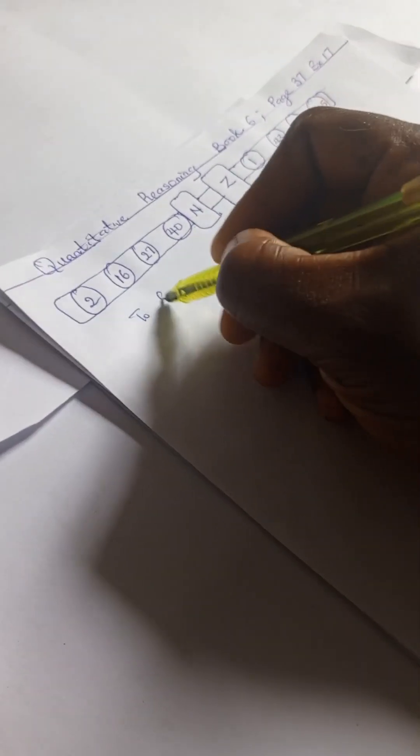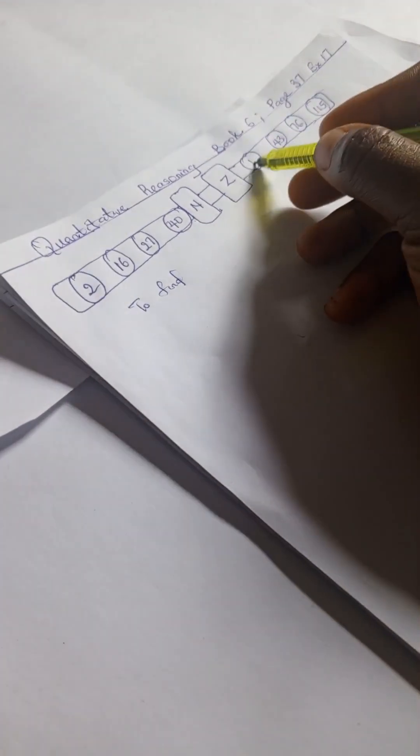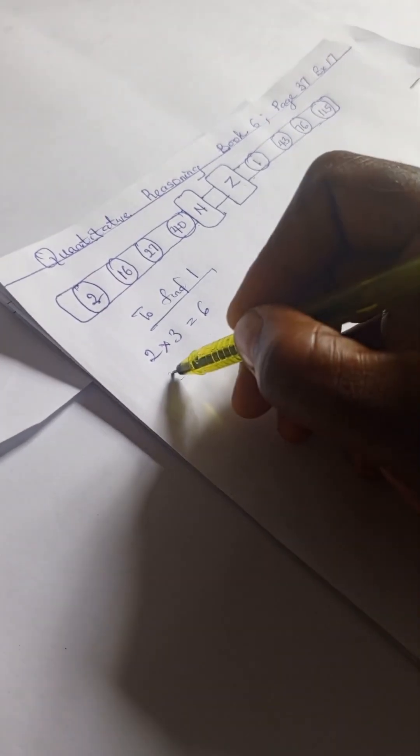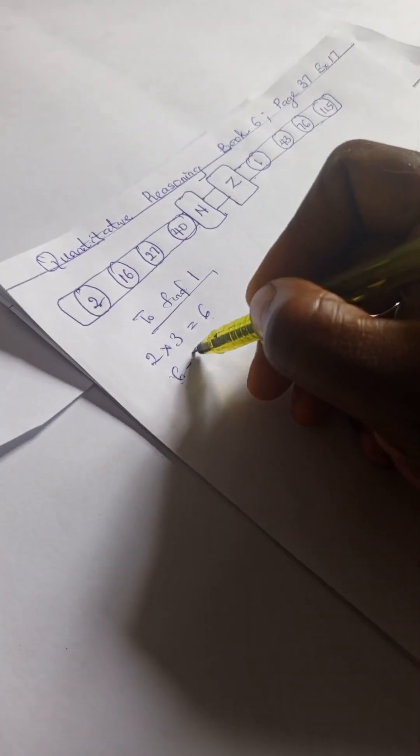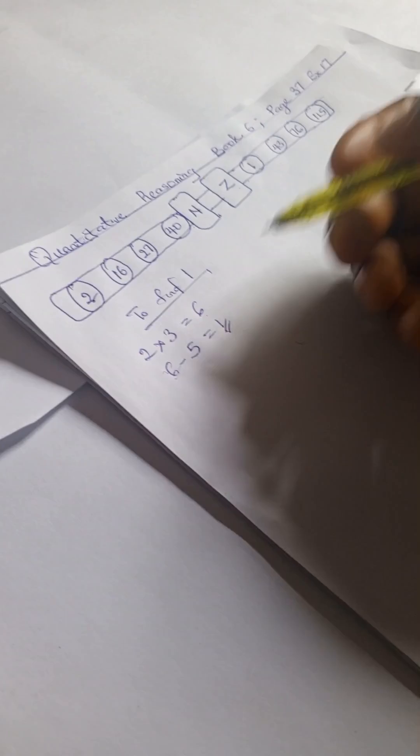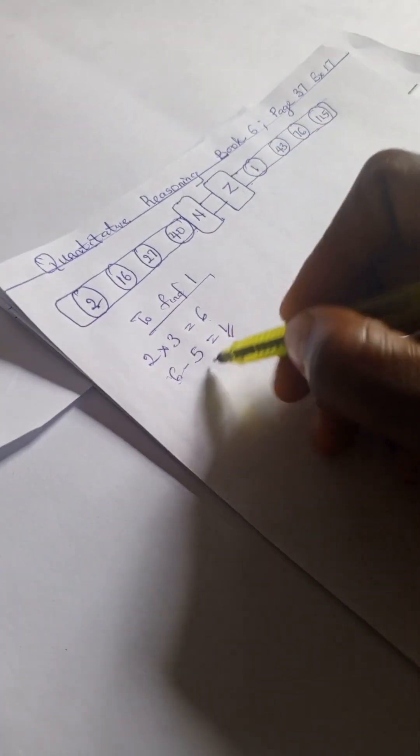So we're going to find 1 here. For 1, we're going to be having 2 times an imaginary 3, and that gives us 6. So 6 minus an imaginary 5 gives us 1. Let's try the next if it's going to work.